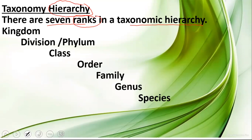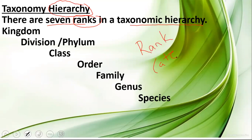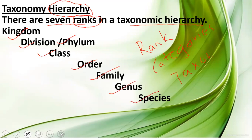Every subsequent place of an organism is considered as a taxonomic rank. Ranks are also considered as categories. They are also considered as taxon. So these are the different names given for the ranks. So what are those? Kingdom, then division or phylum — we are going to discuss division and phylum again — class, order, family, genus, and species.